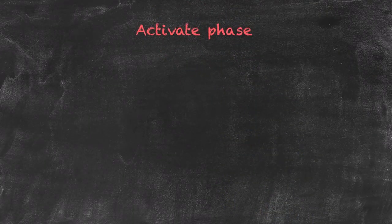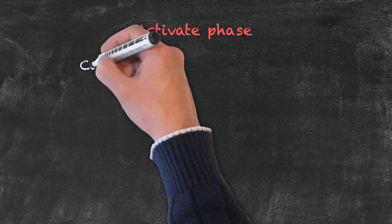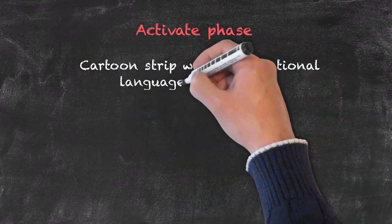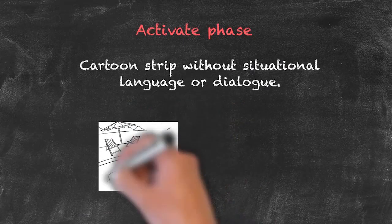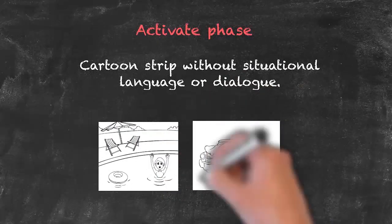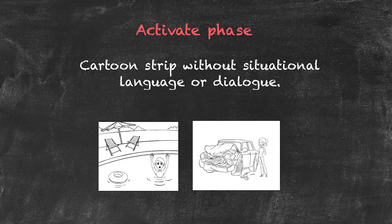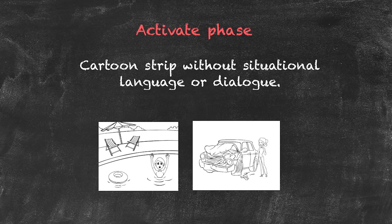For the final activate stage, we put the two ideas from the study phase together and give students a cartoon strip that has neither the situational description nor any dialogue in the speech bubbles, and they have to fill in both. Once they've done that, they can read those back to us for feedback, and we can correct any common mistakes.